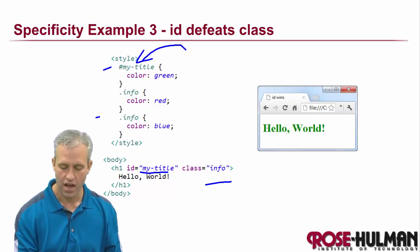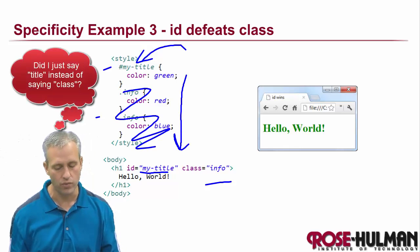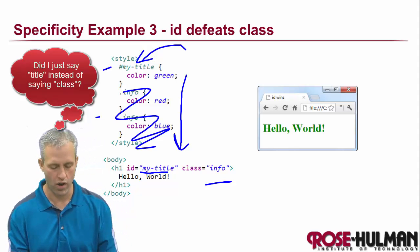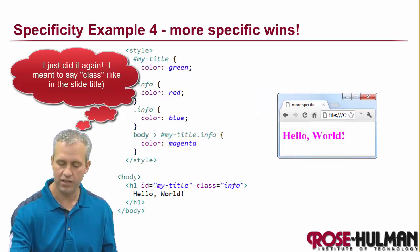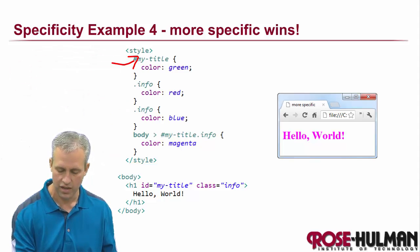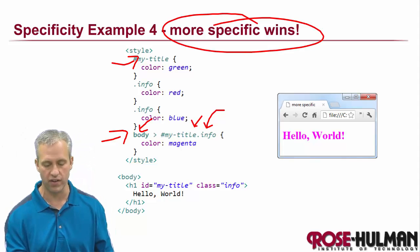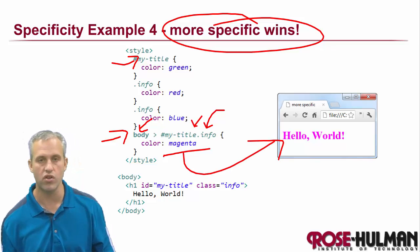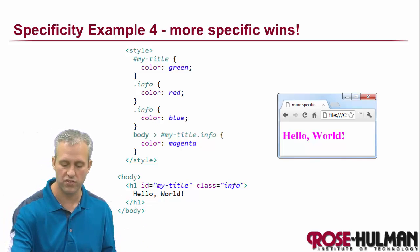An ID is considered more specific, so there may be things later in the file but ID defeats class. It's not like there's anything sacred about ID though. Here we've got an ID that says it should be green, and then another element which has an ID, a class, and a tag. If something is more specific, it wins — so this text is magenta for a reason. This follows a whole elaborate set of rules referred to as specificity.